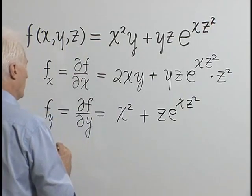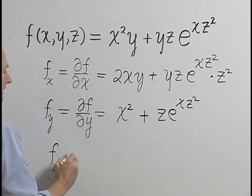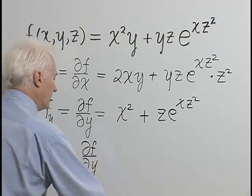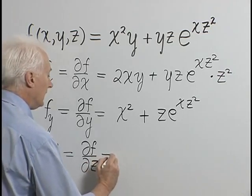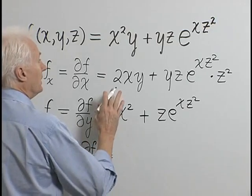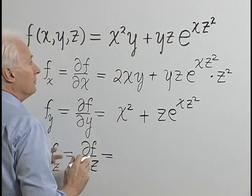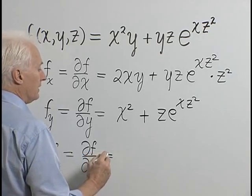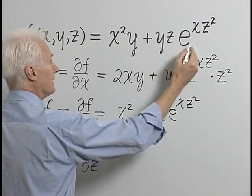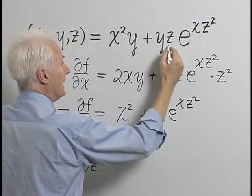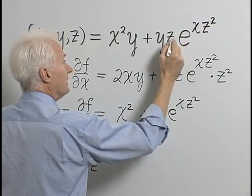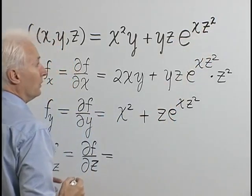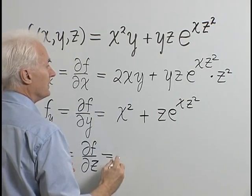Now let's compute the partial derivative with respect to z. We think of x and y as constant. The first term x²y is completely constant with respect to z, so its derivative is 0. In the second term, y is a constant, but we have two factors involving z: the z itself and the exponential e^(xz²). So we're going to have to use the product rule.